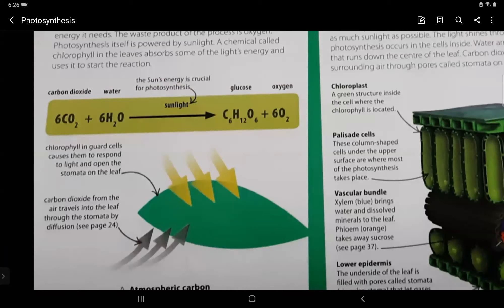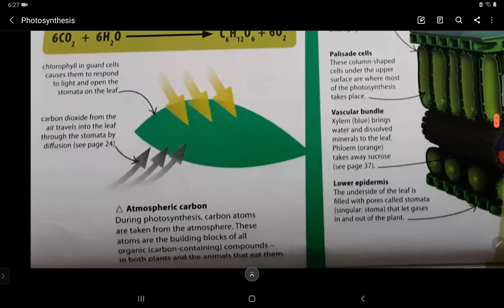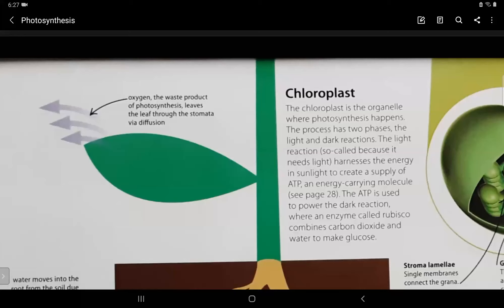Now, this is also a leaf. The chlorophyll in the guard cells causes them to respond to light and open the stomata on the leaf. Carbon dioxide from the air travels into the leaf through the stomata by diffusion. Now, the atmospheric carbon. During photosynthesis, carbon atoms are taken from the atmosphere. These atoms are the building blocks of all organic compounds in both plants and animals which eat them.